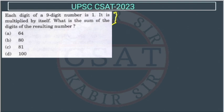Now each digit of a 9-digit number is 1, so we have 111... how many times? This is total 9 times. Okay, this is multiplied by itself, so we are multiplying it with again this thing.